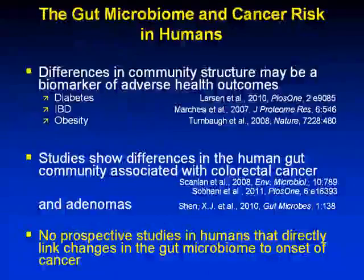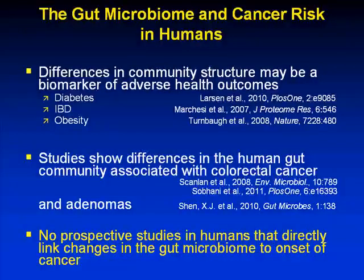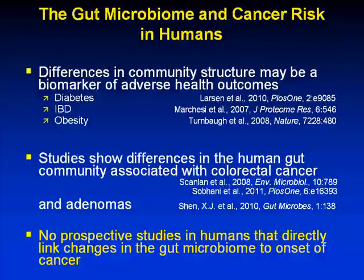What do we know about the gut microbiome and cancer risk in humans? At this point, we don't know a lot. We do know that with regards to other chronic diseases — such as diabetes, inflammatory bowel disease, and obesity — there are recognized differences in community structure that could be related to adverse health outcomes, and experimentally you can show shifts in severity of disease as a result of this.